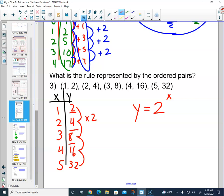2 to the third power is 8. 2 to the fourth power is 16. 2 to the fifth power is 32. It worked out. So my function rule is y equals 2 to the x power. Again, this is a non-linear function.